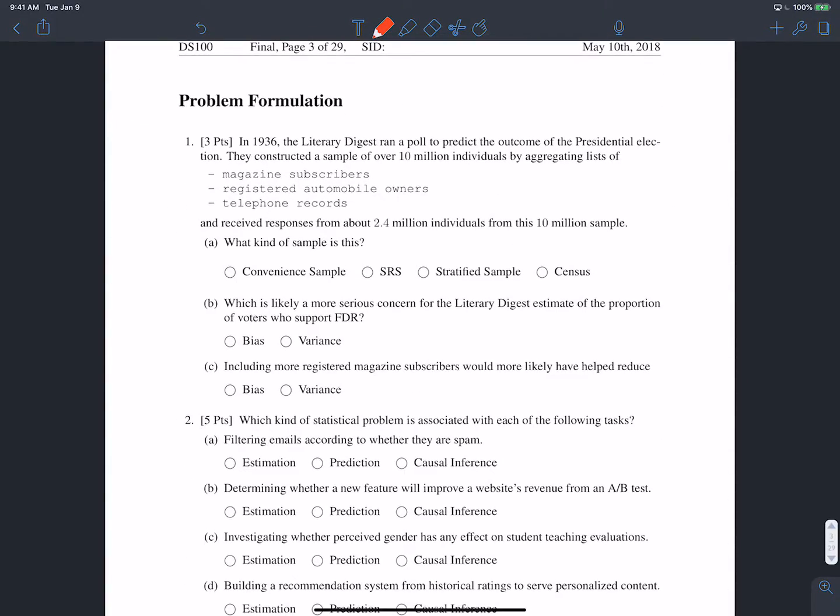So we start with this section that talks about different types of sampling techniques and outlining the various problems that we've seen in the course. The very first one talks about this literary digest poll in 1936 where they aggregate lists of magazine subscribers, automobile owners and telephone records and received responses from 2.4 million individuals from the sample. What kind of sample is this?